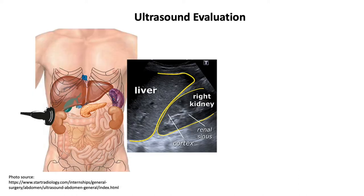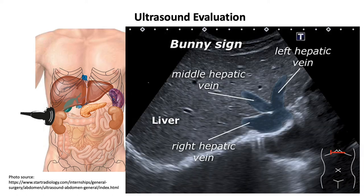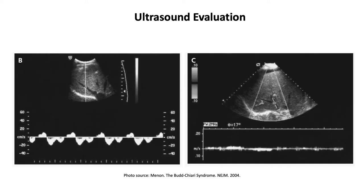When we perform the ultrasound, we're looking at the liver and trying to see the three hepatic veins: the right hepatic vein, middle hepatic vein, and left hepatic vein. We use Doppler to confirm good biphasic waveforms in the veins. On the left image, you can see a normal Doppler with nice biphasic blood flow. The image on the right shows an absence of blood flow and loss of that biphasic waveform, confirming Budd-Chiari syndrome.